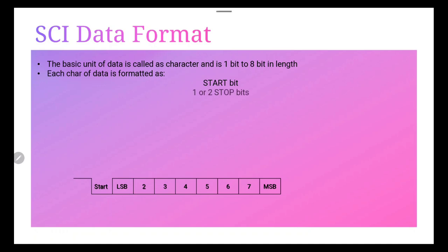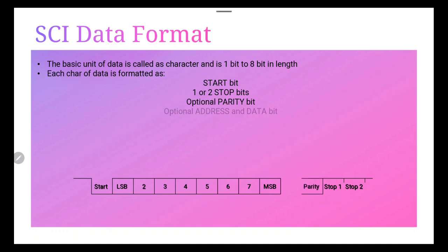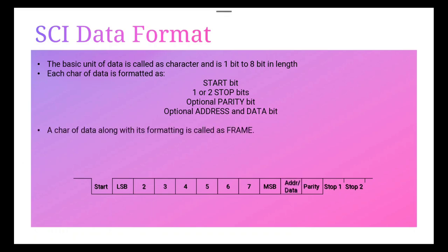A frame consists of: a start bit, one to two stop bits, an optional parity bit, and an optional address/data bit. This complete data along with start bit, stop bits, parity, and address bit is known as a frame. When such frames are organized in a group, they are called blocks.